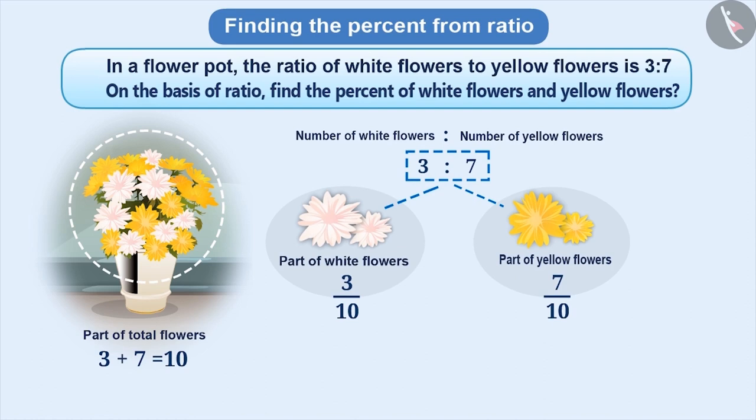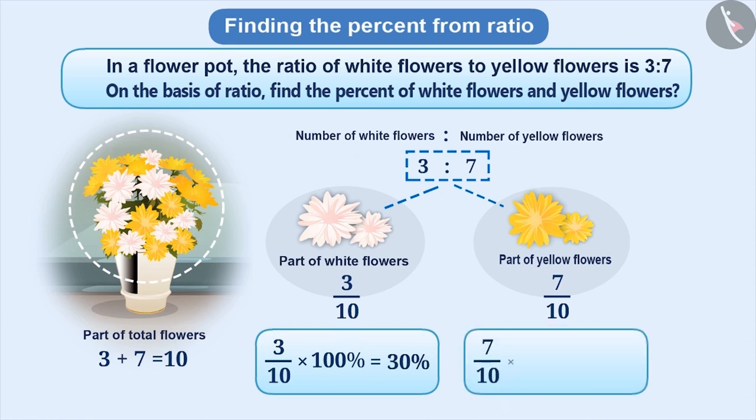Now, we can express it as percent. 3 by 10 into 100% is equal to 30%, and 7 by 10 into 100% is 70%.